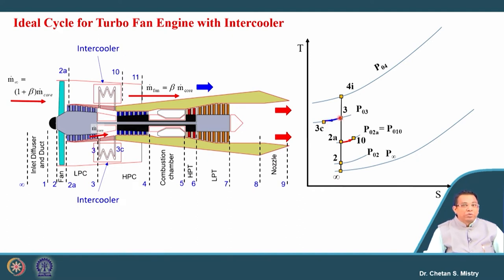The intercooler reduces the temperature of the air coming out of the LP compressor. The exhaust from the bypass duct provides the cooling: the heat liberated by the hot air is taken up by the cold bypass air, raising its temperature from 2A to 10.